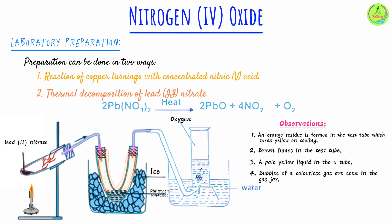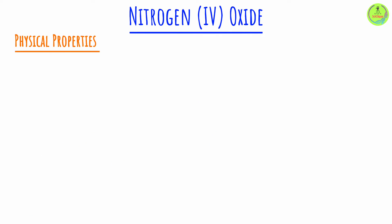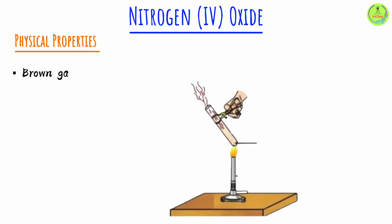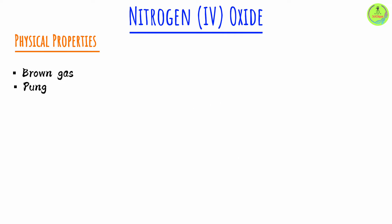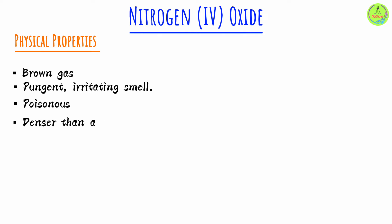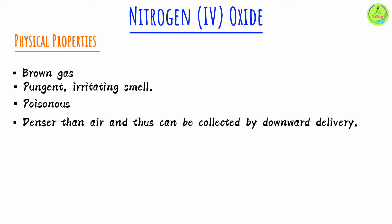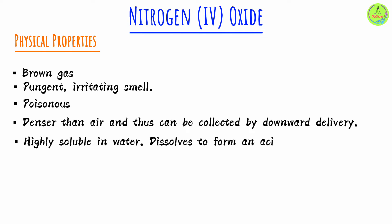Moving on to the physical properties: nitrogen dioxide is a brown gas — this is a distinctive characteristic of NO₂, so whenever you find brown fumes in a practical, that is NO₂. It has a pungent irritating smell and it's poisonous. Its density is greater than air, which is why it can be collected by downward delivery. Regarding solubility, it is highly soluble in water and dissolves to form an acidic solution.